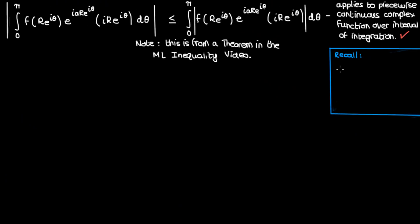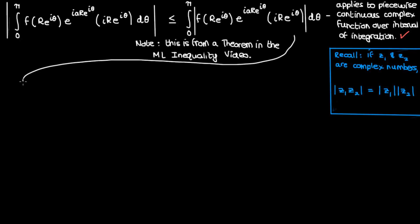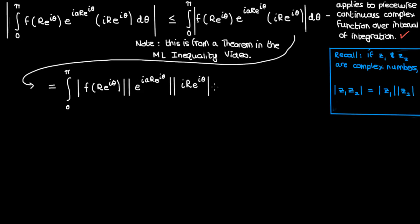Let's recall another fact from complex analysis: if we have two complex numbers z₁ and z₂, then the magnitude of their product equals the product of their magnitudes. We apply this logic to split up all the magnitudes inside the integral. For the last magnitude we further split it: the magnitude of i is 1, the magnitude of the positive real constant R is just R, and the magnitude of e^(iθ) is also 1. You can verify this last one using Euler's formula — e^(iθ) equals cos θ + i·sin θ, and its magnitude is the square root of cos²θ + sin²θ, which is 1.